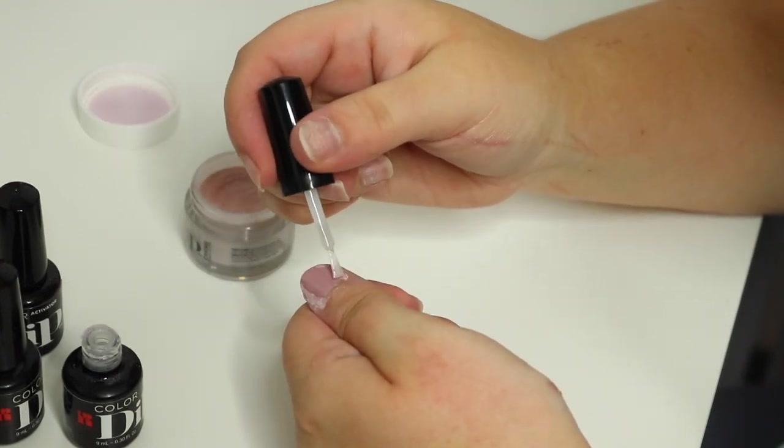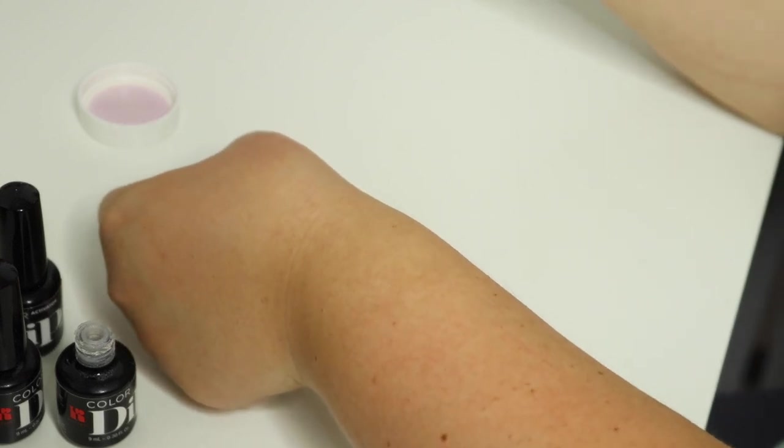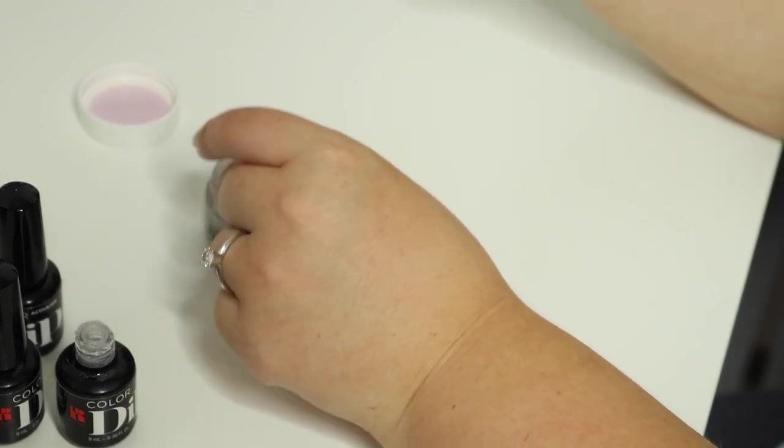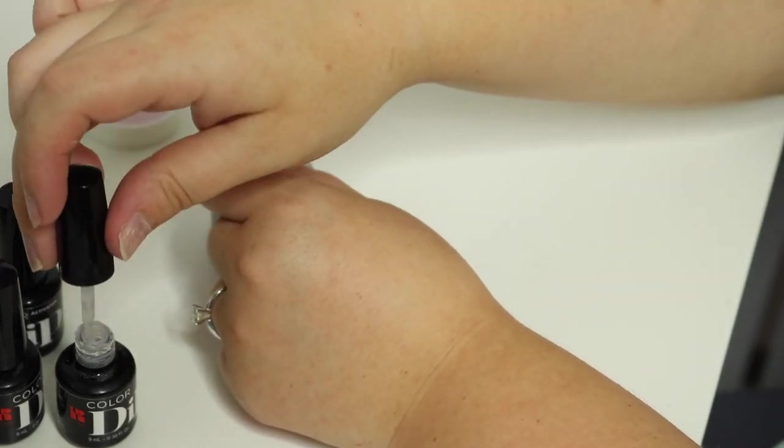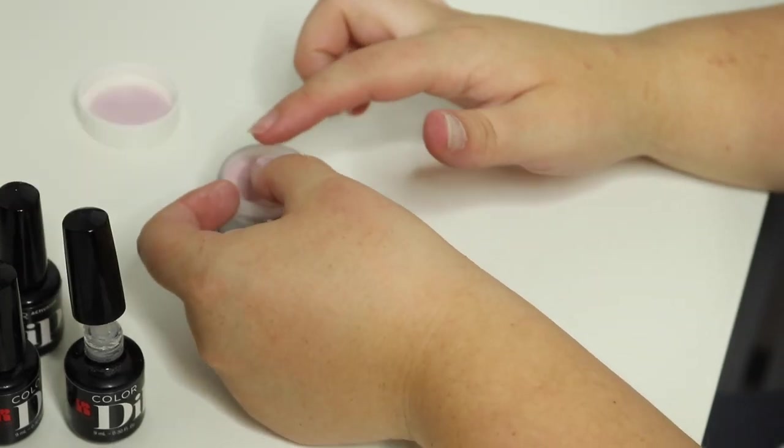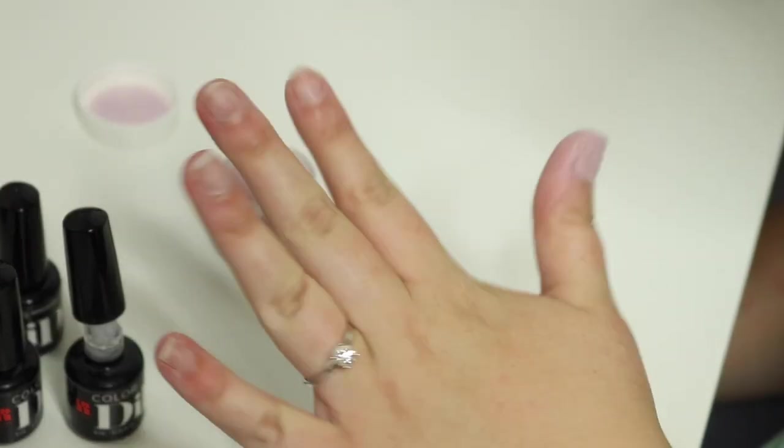So I'll do one more thin coat. Dip. Tap it off. Wipe it off. And then repeat for the rest of your fingers.